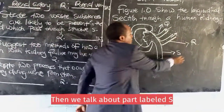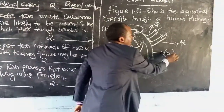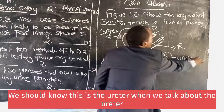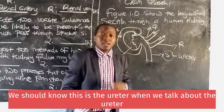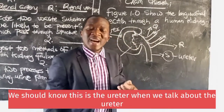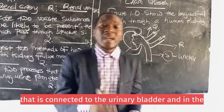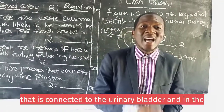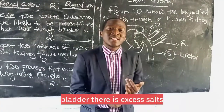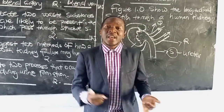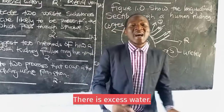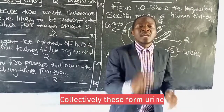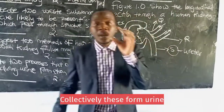When we talk about other parts, this is the ureter, which is connected to the urinary bladder. In the bladder there is excess salts, excess water, and urea. Collectively, these form urine.